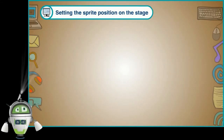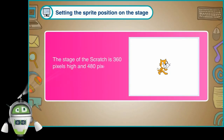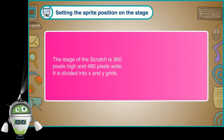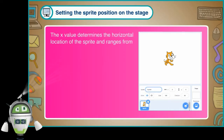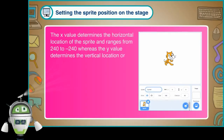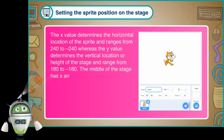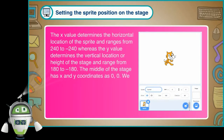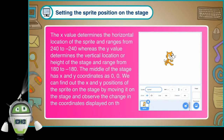Setting the sprite position on the stage: The stage of Scratch is 360 pixels high and 480 pixels wide. It is divided into X and Y grids. The X value determines the horizontal location of the sprite and ranges from 240 to minus 240, whereas the Y value determines the vertical location and ranges from 180 to minus 180. The middle of the stage has X and Y coordinates as 0, 0.